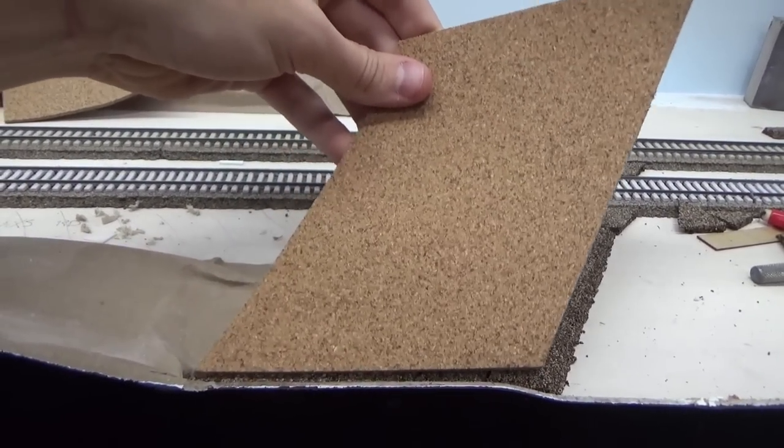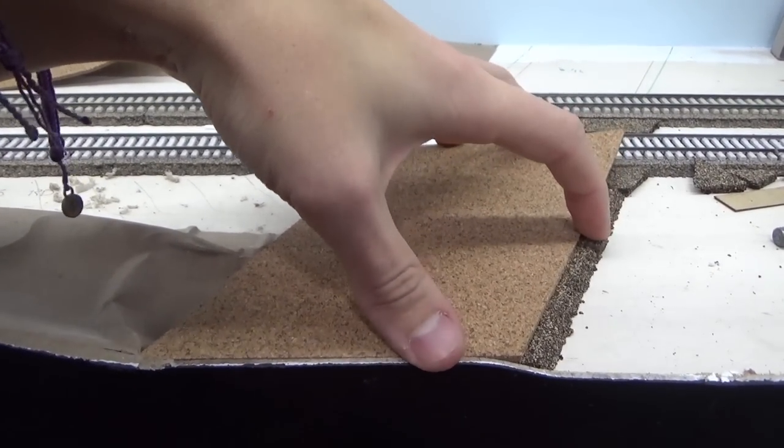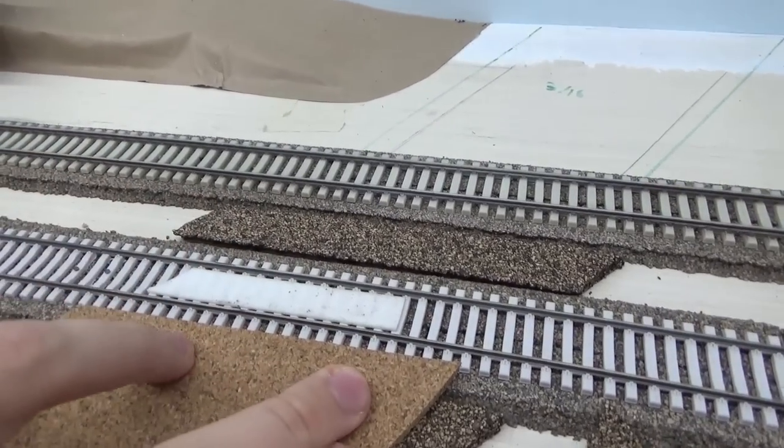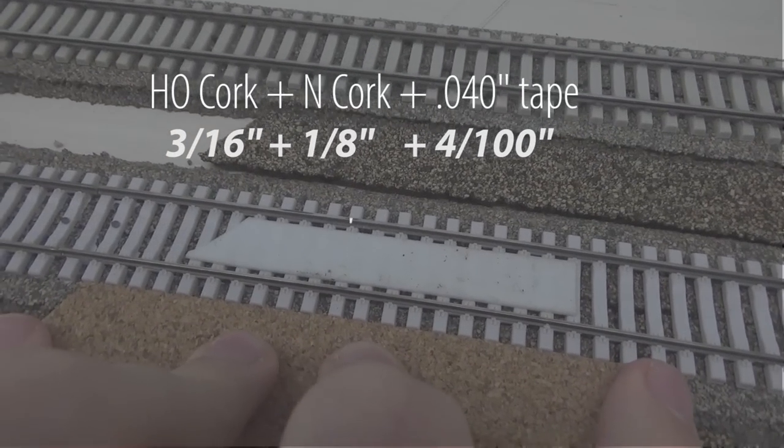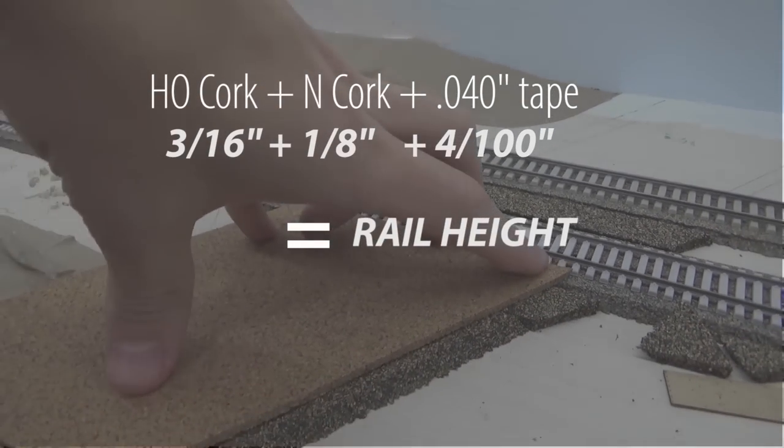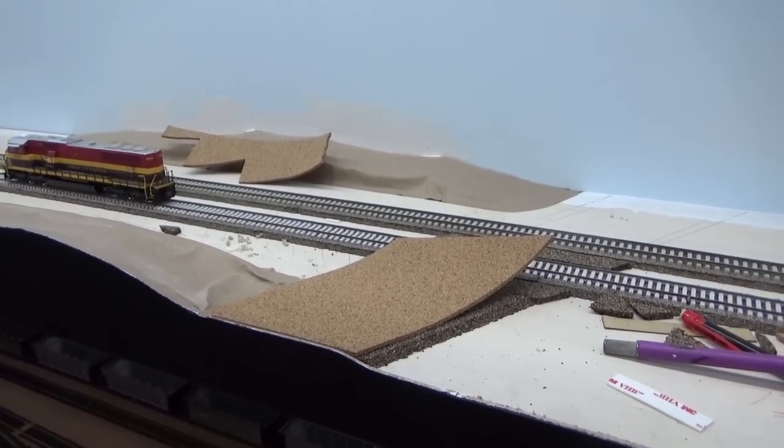We'll see later that the grade crossing panels I chose are four hundredths of an inch thick, and conveniently, the tape I'm going to use is also four hundredths of an inch thick, which means using the N-scale cork and HO scale cork on top of each other plus the tape will bring the road height perfectly up to rail level.